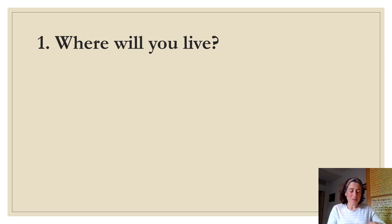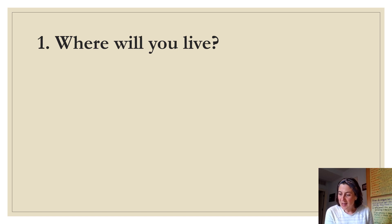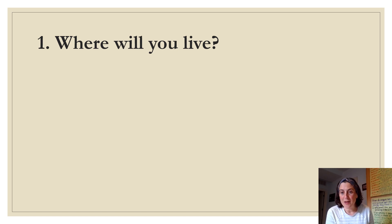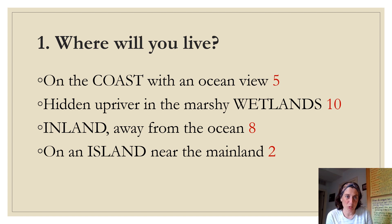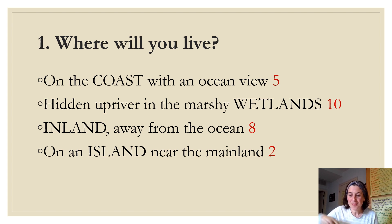Decision one reveal — where will you live? You've been on this ship for 144 days and you get to Virginia. What really happened at Jamestown: they decided mostly to settle upriver in the marshy wetlands. This location hid them from Spanish warships and also made it easy to defend from Native Americans because they had coverage. Points: coast gets 5, wetlands gets 10, inland gets 8, and island gets 2.